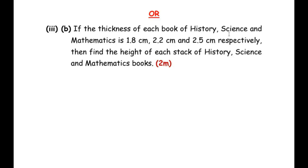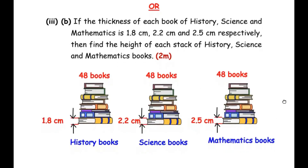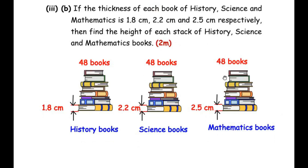Now for the OR question: if the thickness of each book of history, science, and mathematics is 1.8 cm, 2.2 cm, and 2.5 cm respectively, find the height of each stack. Since each stack contains 48 books, we multiply the thickness of one book by 48 to get the height of the stack. This same logic applies to history, science, and mathematics books.